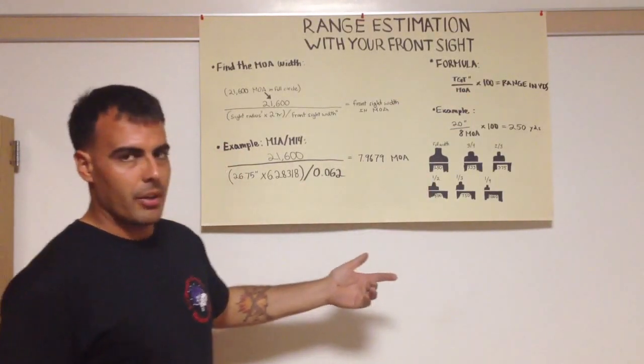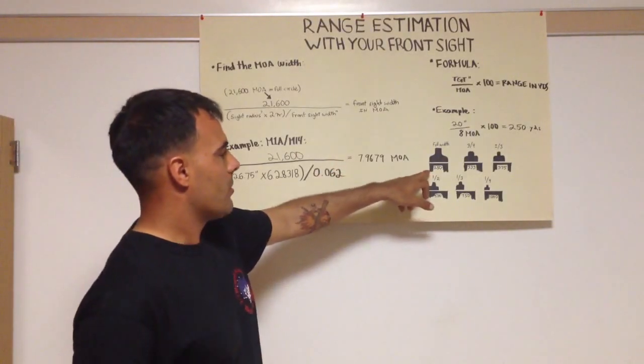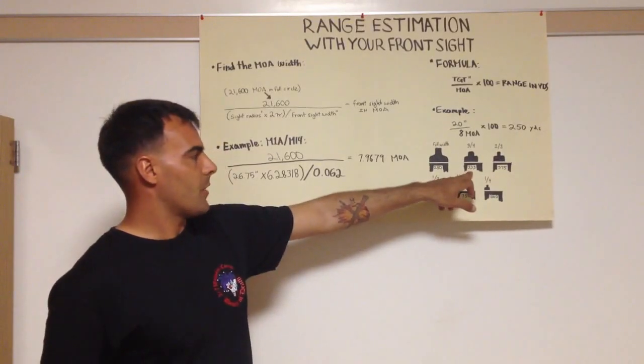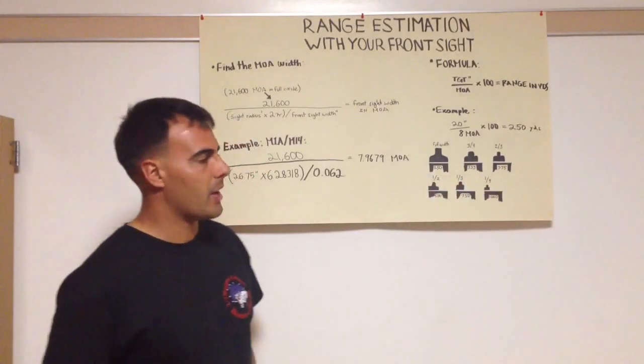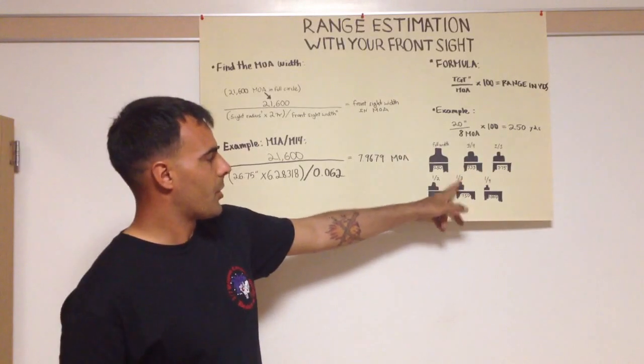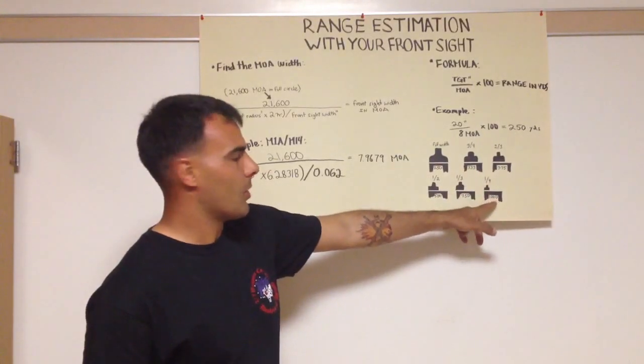So down here, with my M14 or M1A, full width is 250 yards. The target is three-quarters of my front sight, that's 335 yards. Two-thirds of my front sight, 375 yards. Half of my front sight, 500 yards. One-third of my front sight, 750 yards. A quarter of my front sight, 1,000 yards.